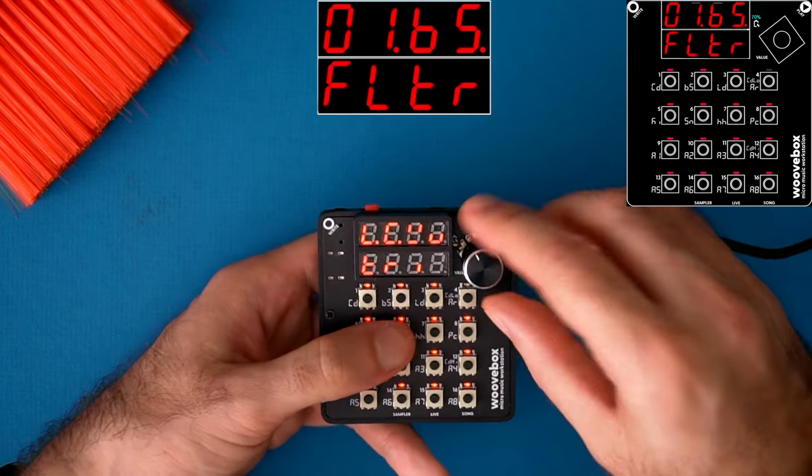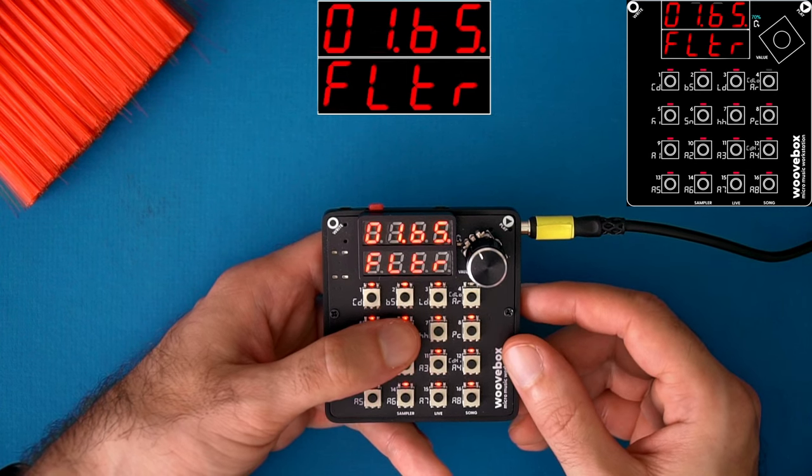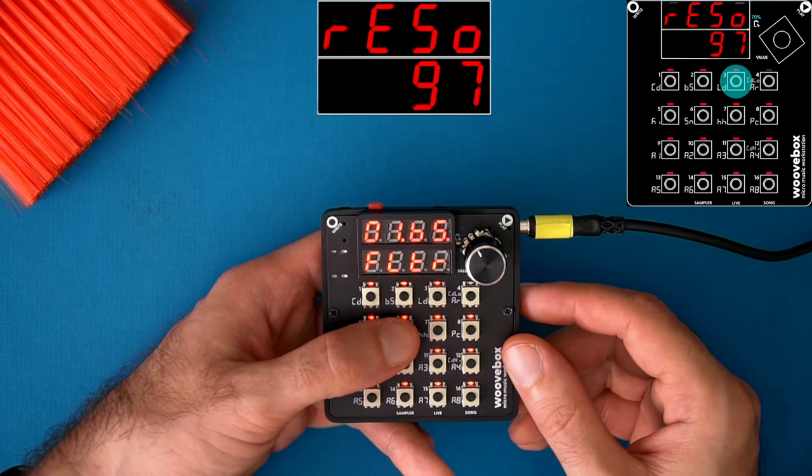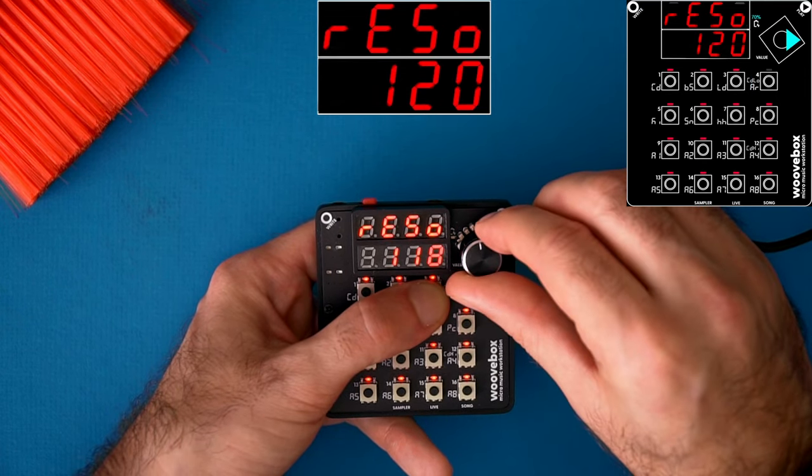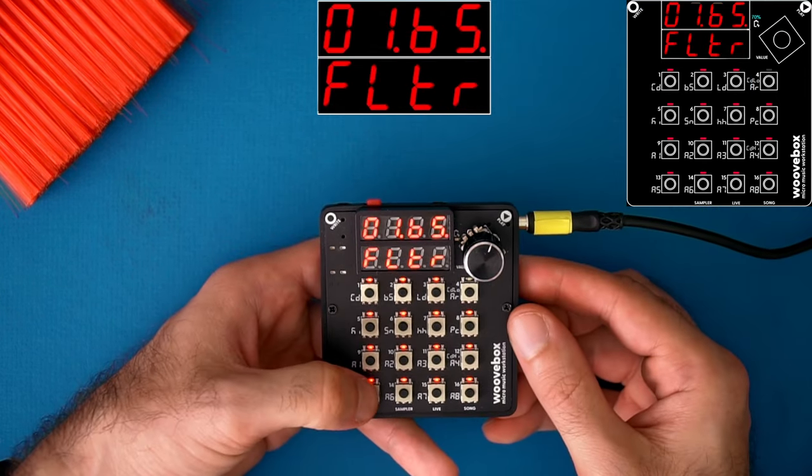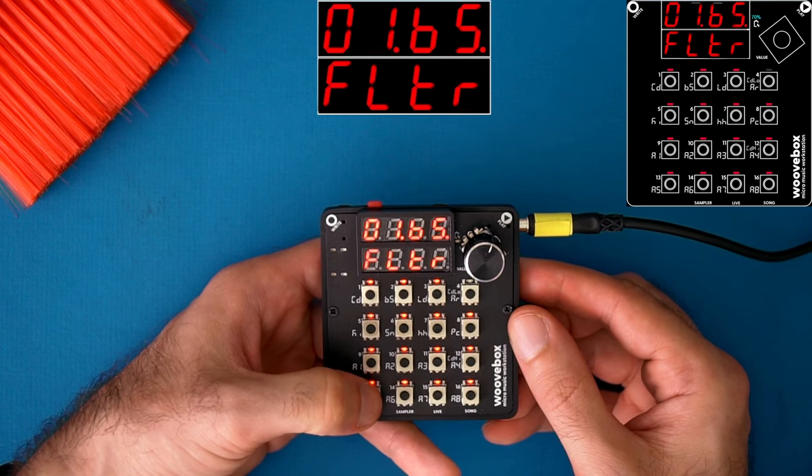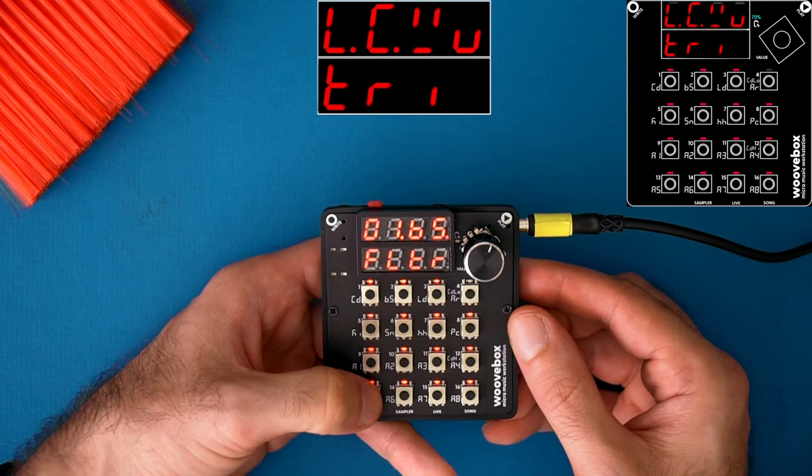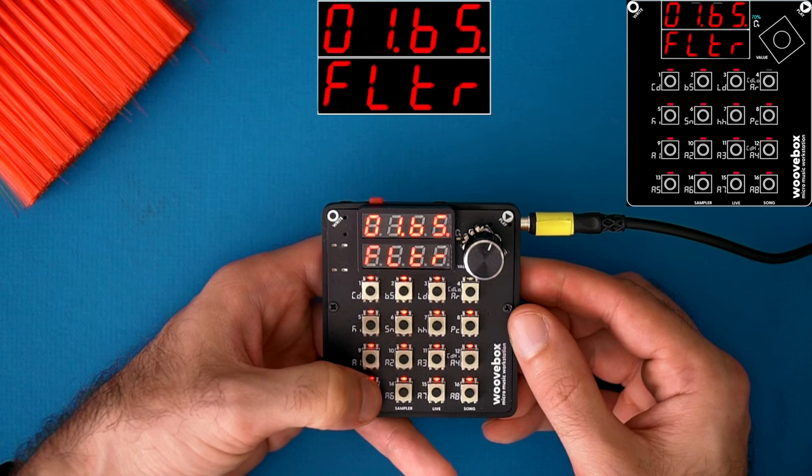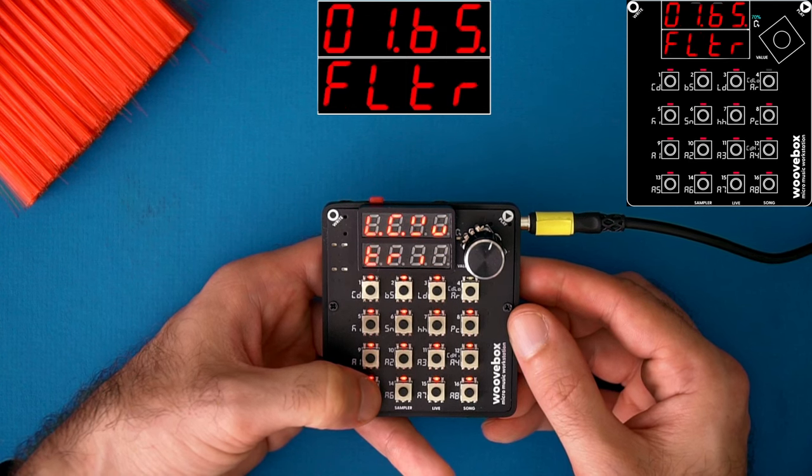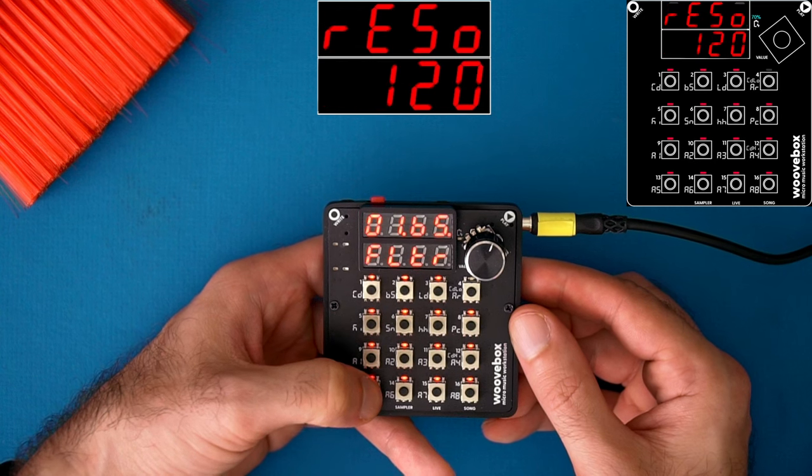Low-pass 2 is also a 24dB low-pass filter, but this one is self-resonating and can scream at high-resonating settings. So be careful. I think this might be my favorite one.